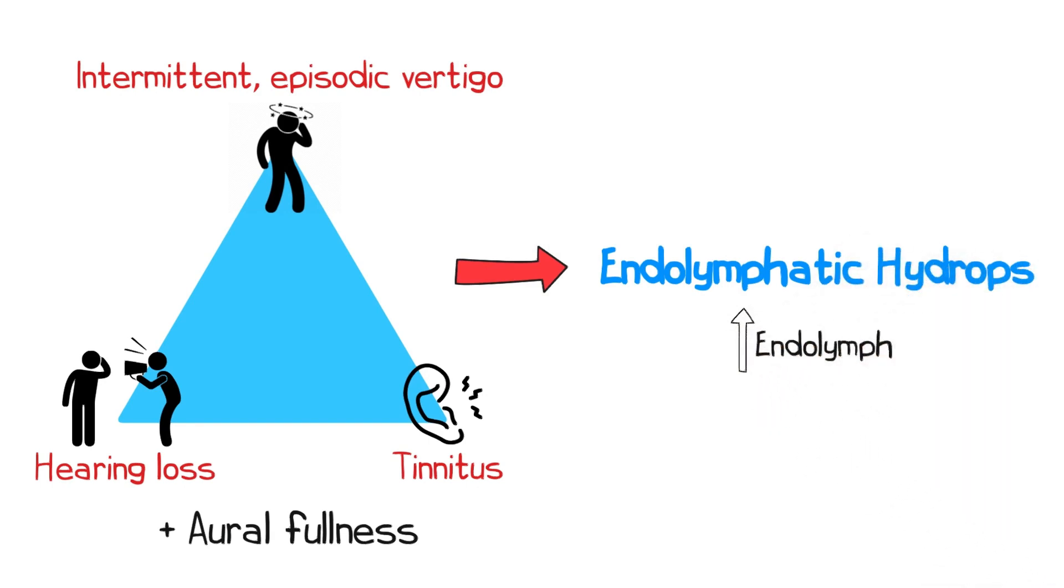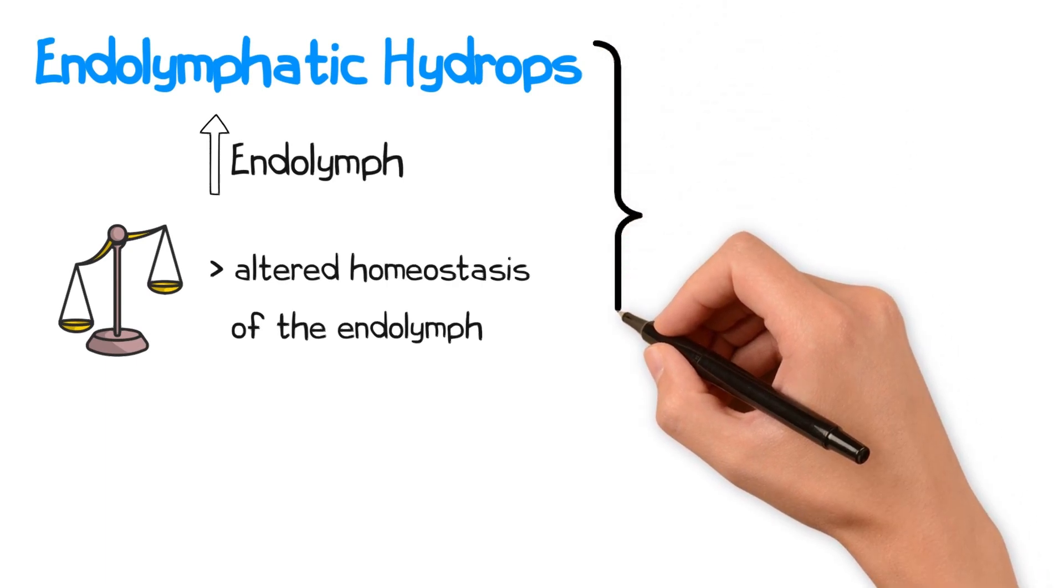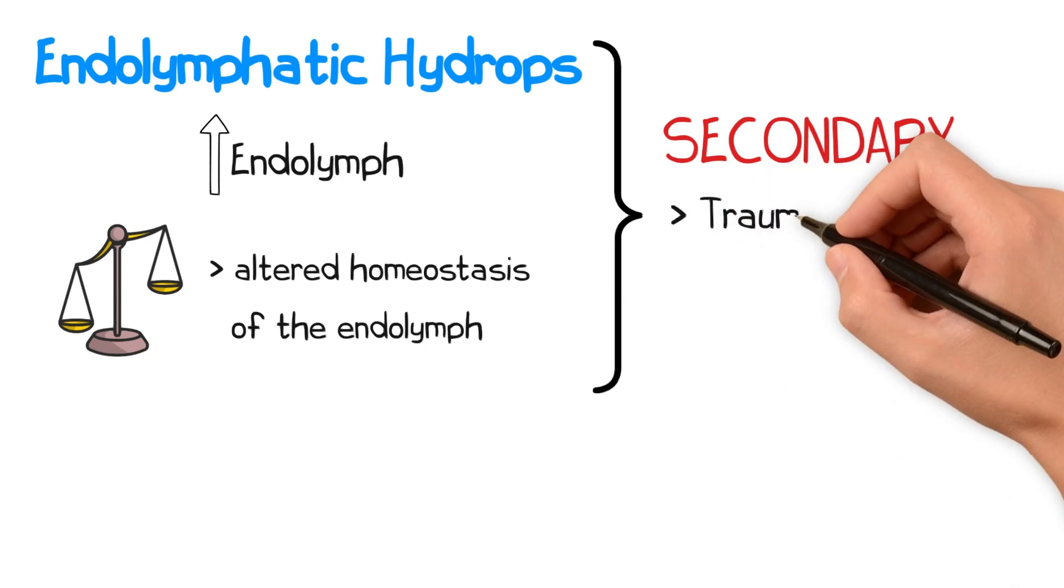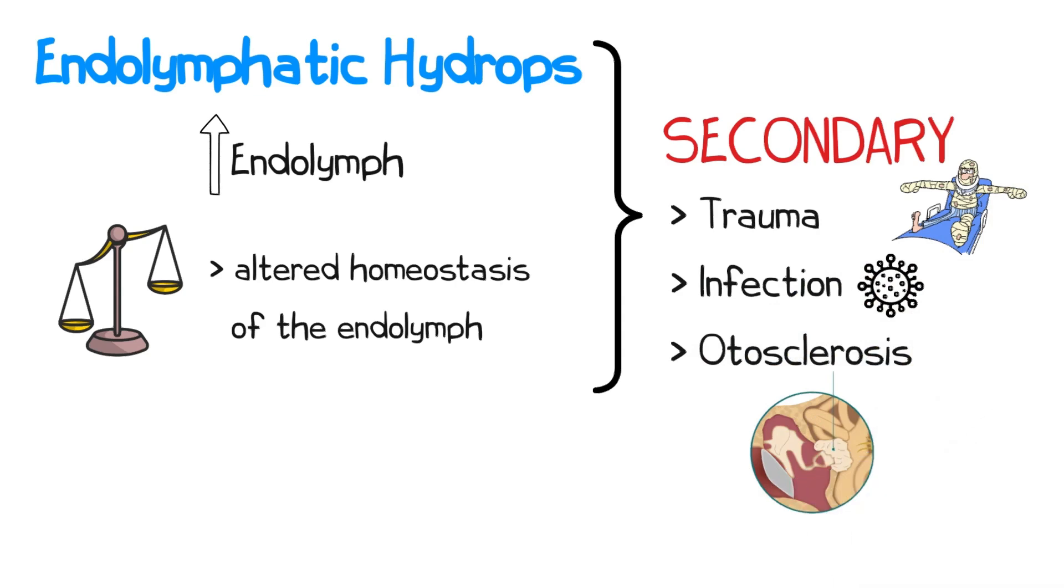The reason why this occurs is unknown, but thought to relate to disruptions in the microcirculation of the ear resulting in altered homeostasis of the endolymph. However, when this process occurs secondary to a known inner ear disorder, such as trauma, infections, or otosclerosis, this is termed Meniere's syndrome.